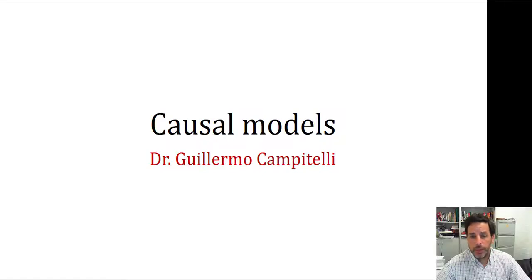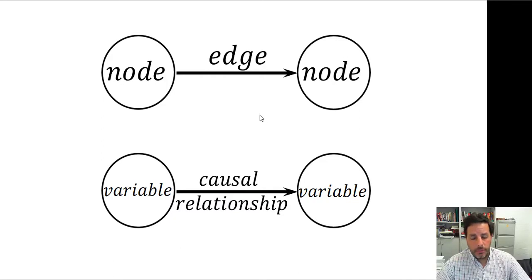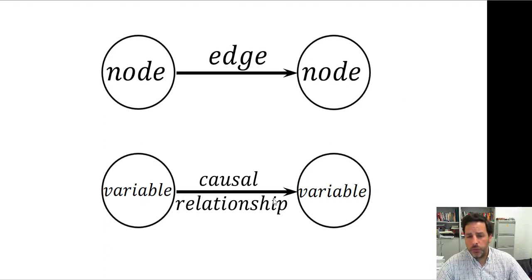Hi, I'm Guillermo Campitelli and I'm going to talk about causal models. This is a very brief introduction to causal models. Causal models have two components: a node and an edge. We need at least two nodes and one edge. The nodes represent variables and the edges represent causal relationships between variables.